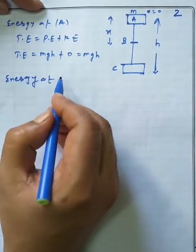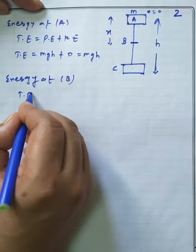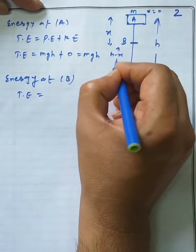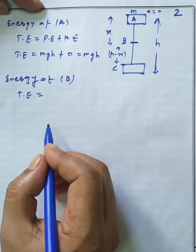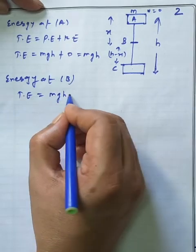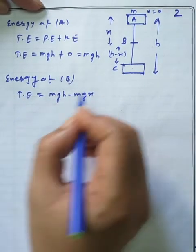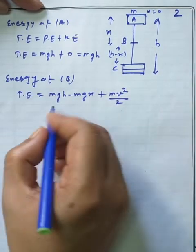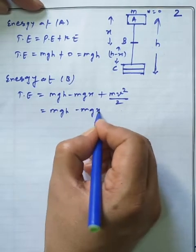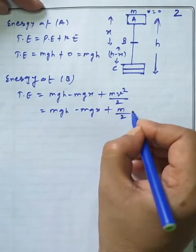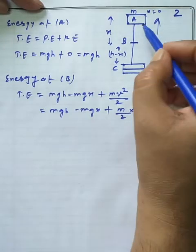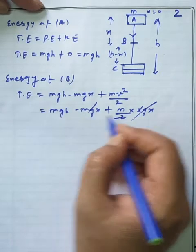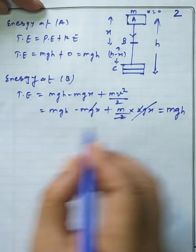Energy at point B: total energy equals potential energy plus kinetic energy. The remaining height is H minus x, so potential energy is Mg(H − x), which gives MgH minus MgX, plus half Mv². Using v² = 2gx (since the object has fallen distance x from A to B), the two cancels, and we get MgH as the total energy at point B.